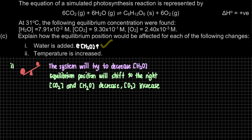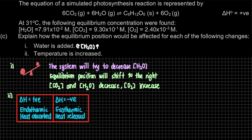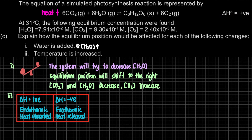For question C part 2, the temperature is increased. When discussing temperature changes, we must consider whether the reaction is endothermic or exothermic. Delta H is positive, meaning it is endothermic — heat is absorbed — so heat is effectively on the reactant side of the equation.